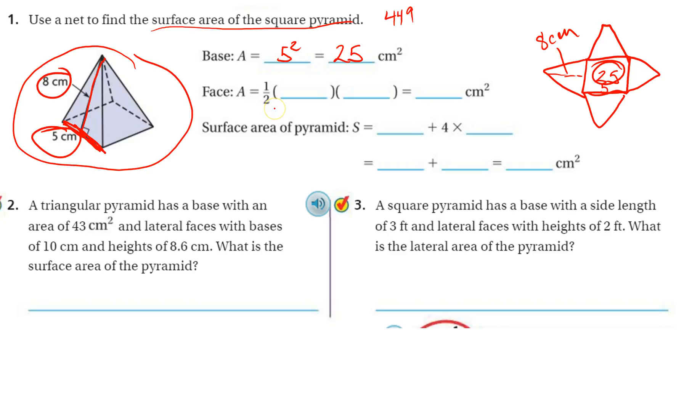And then for each face, each triangle, it's 1 half base times height. The base is 5. The height is 8. And I know half of 8 is 4. So 4 times 5 is 20.